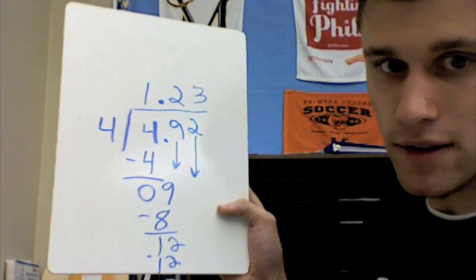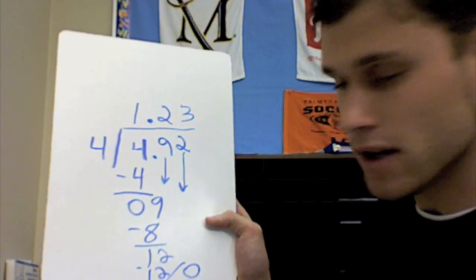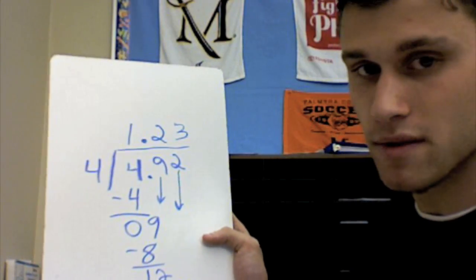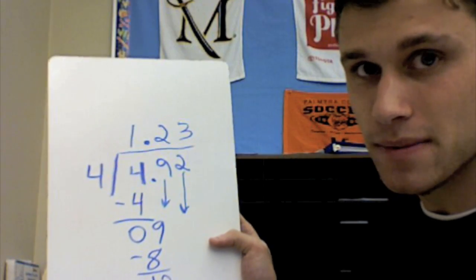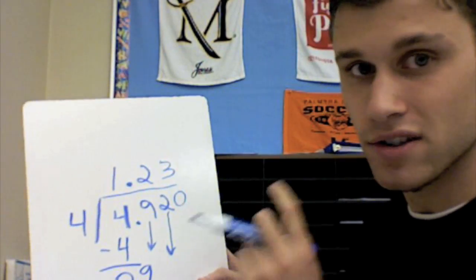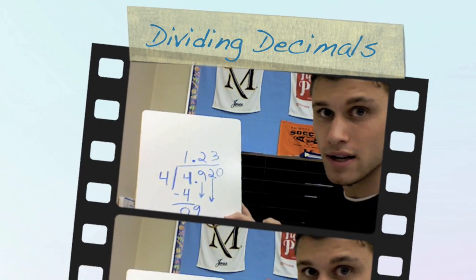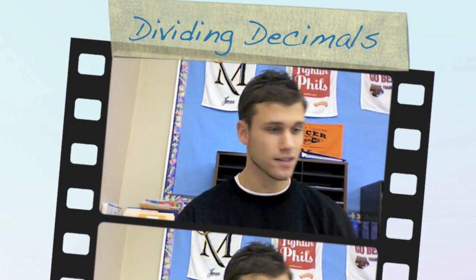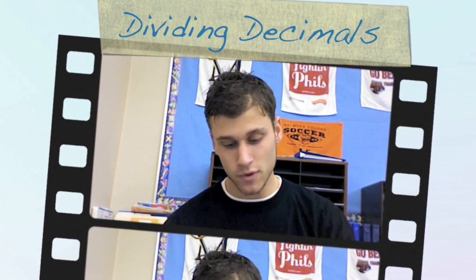If I were to subtract those, we would get 0. And since we have 0, we're all done. We have to do that process until we get 0 as a remainder. If I didn't get 0 as my remainder, the first thing that I would want to do is add a 0 here and just keep going until I lose that remainder. Thanks for joining me with the division lesson for how to divide decimals. I hope that helps you out.